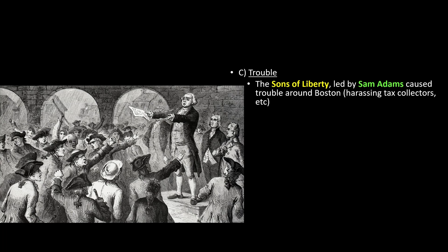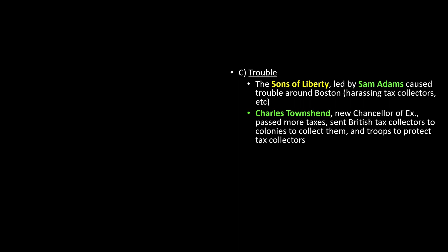In Boston, there's a group called the Sons of Liberty — a rowdy bunch of young men in their 20s led by Sam Adams. They went around causing trouble, harassing British tax collectors, and spreading anger towards Great Britain throughout the colonies. Charles Townshend became the new Chancellor of the Exchequer and passed more taxes. He got the idea to send British soldiers into the colonies, especially Boston with those troublemakers, to make sure tax collectors were protected. So imagine Boston — more soldiers keep showing up.